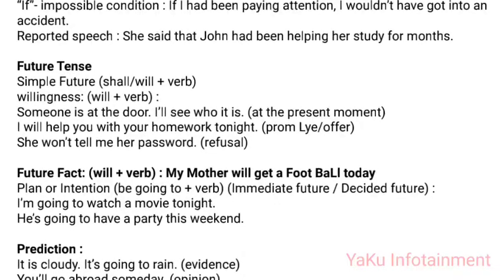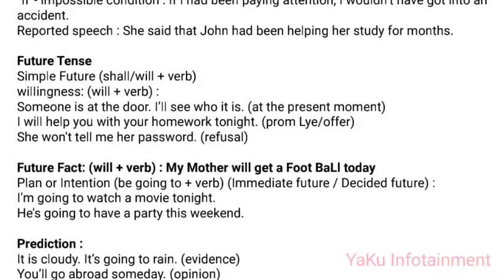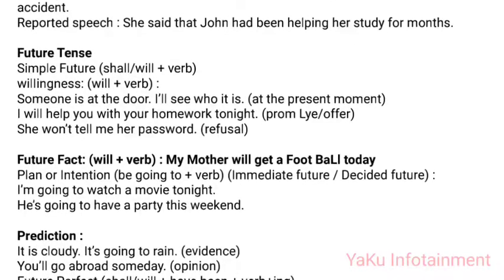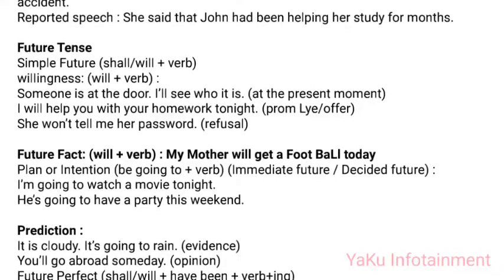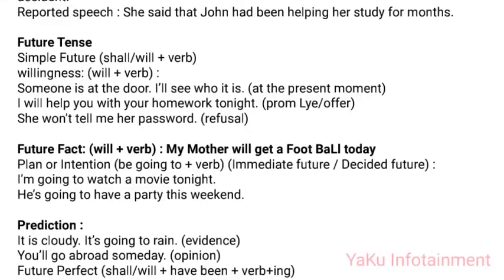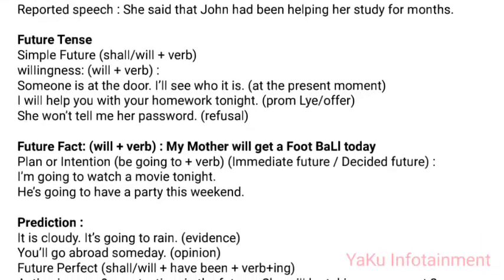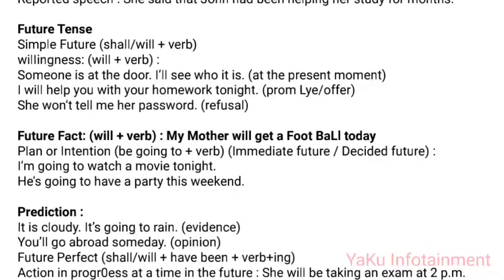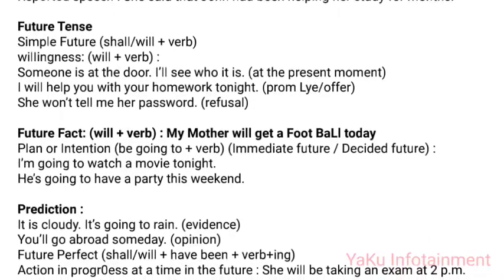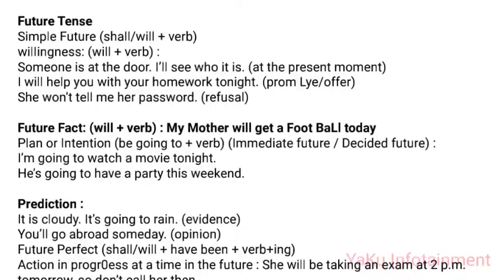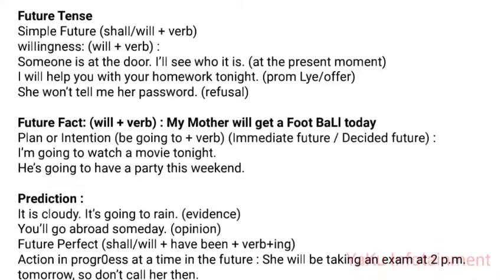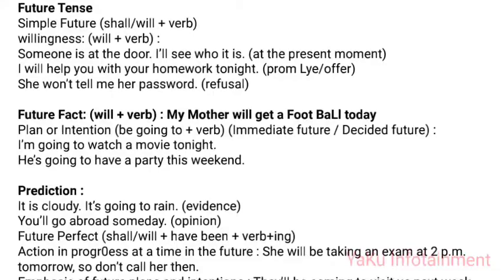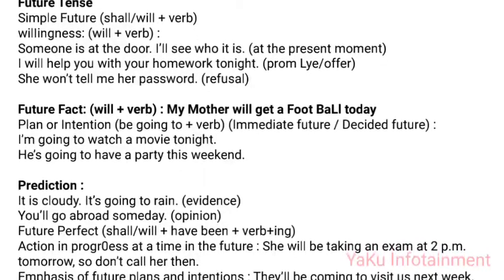Future Tense — Simple Future (shall/will + verb). Uses: (1) Willingness: 'Someone is at the door — I'll see who it is.' (2) At the present moment of decision: 'I will help you with your homework tonight.' (3) Promise/offer: 'She won't tell me her password' (refusal). (4) Future fact: 'My mother will get a football today.' Plan or intention uses 'be going to + verb' for immediate or decided future: 'I'm going to watch a movie tonight,' 'He's going to have a party this weekend.'